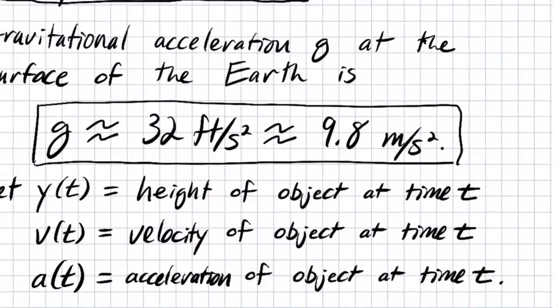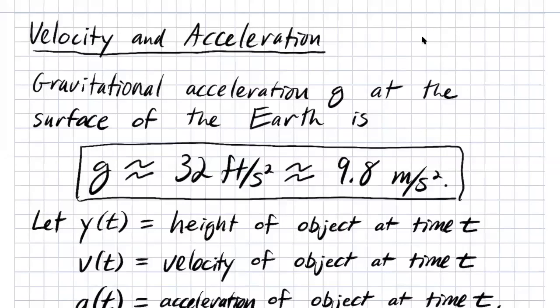A really good example of differential equations that only depend on the independent variable is velocity and acceleration problems — in particular, when there's no friction or air resistance. Once there's air resistance, the rate of change depends not just on time but also on the velocity itself: the faster you go through the air, the more air resistance you experience. So air resistance is a function of how fast you're going — that's a different type. But if we ignore air resistance and imagine we're in a vacuum, velocity and acceleration problems have the simple form we're interested in.